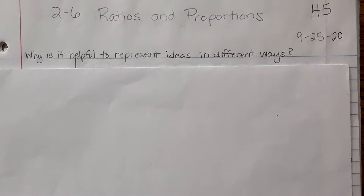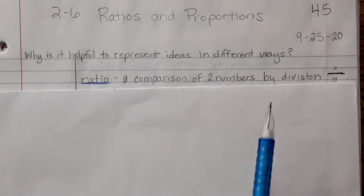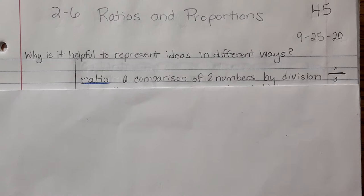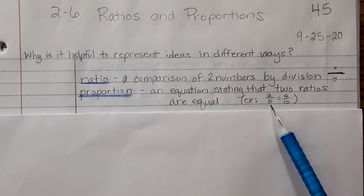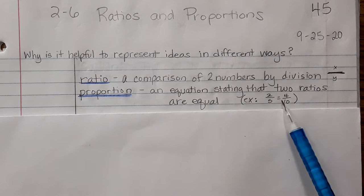A ratio is a comparison of two numbers by division, comparing x to y or x out of y. A proportion is an equation that states that two ratios are equal. So in this example, two-fifths is a ratio, four-tenths is a ratio, and when we state that these two ratios are equal, the whole thing is a proportion.